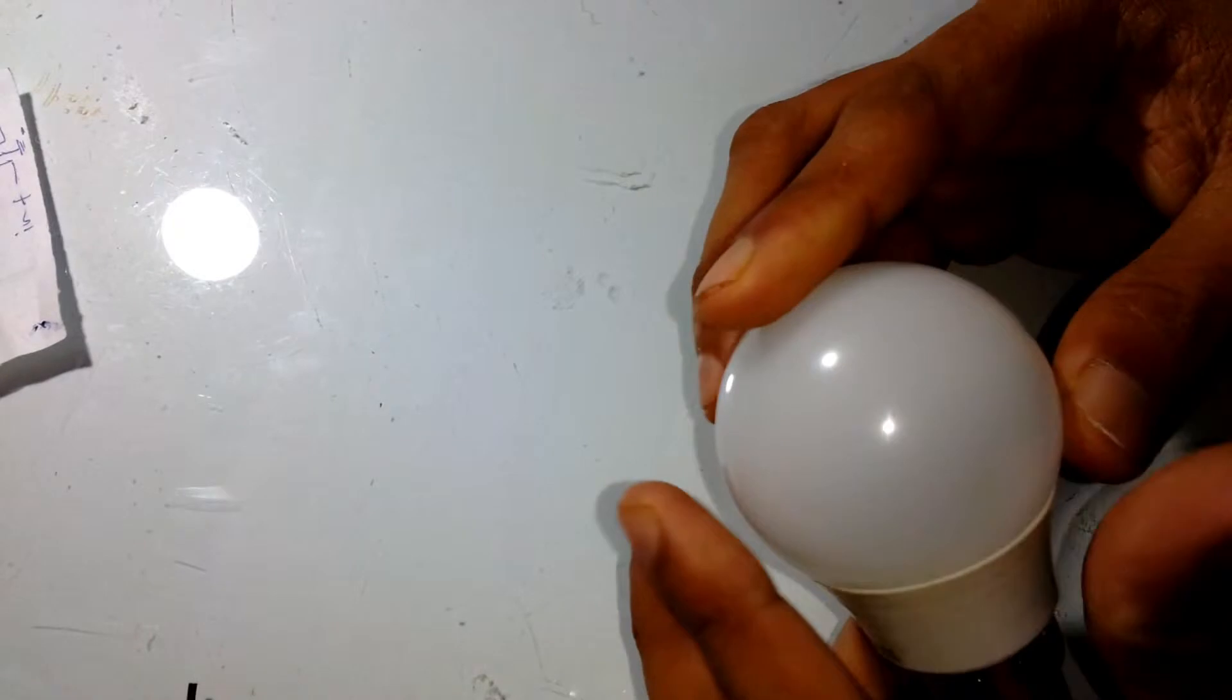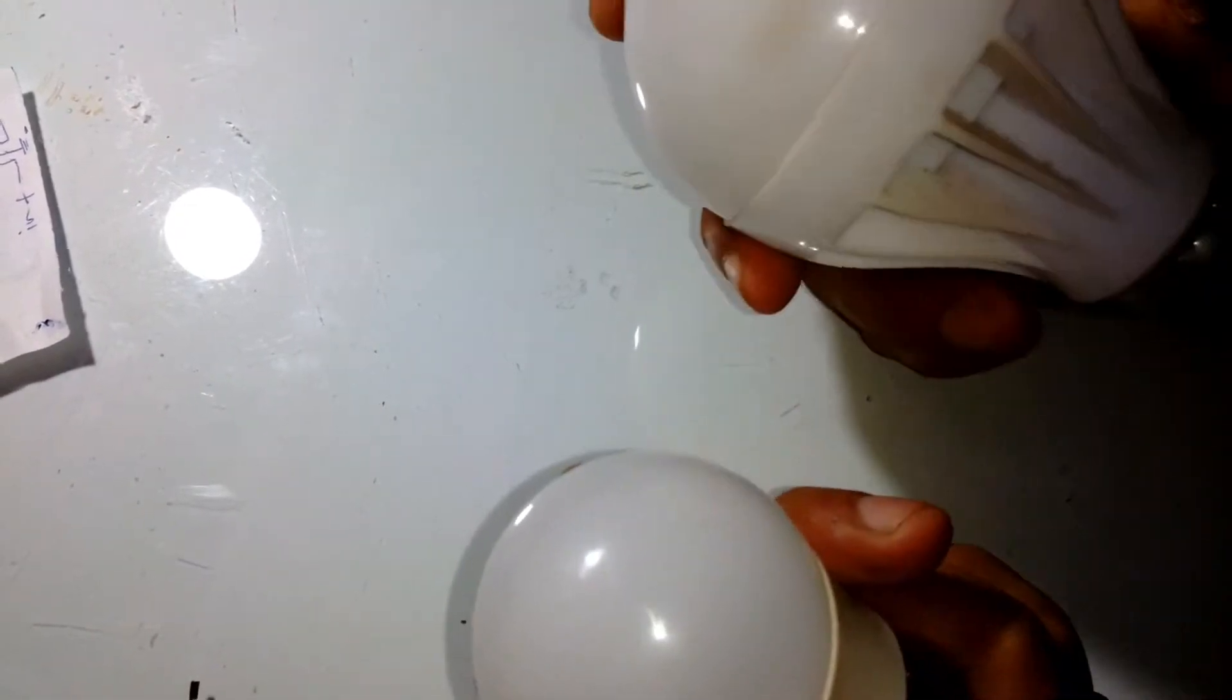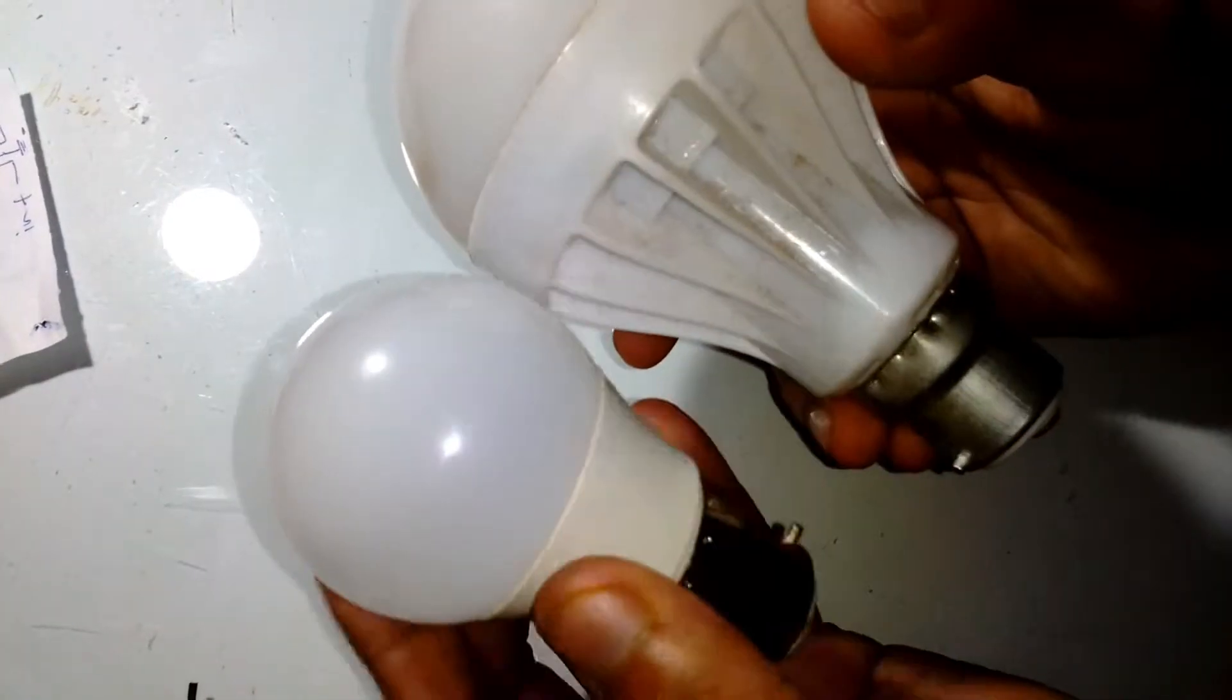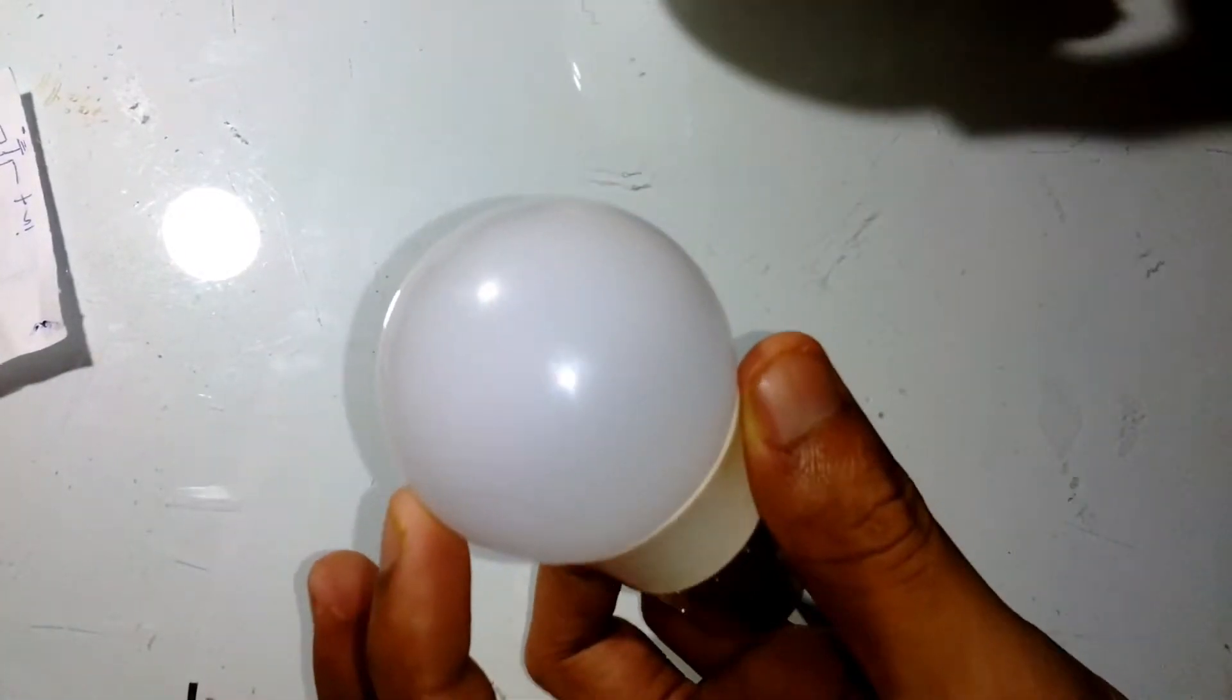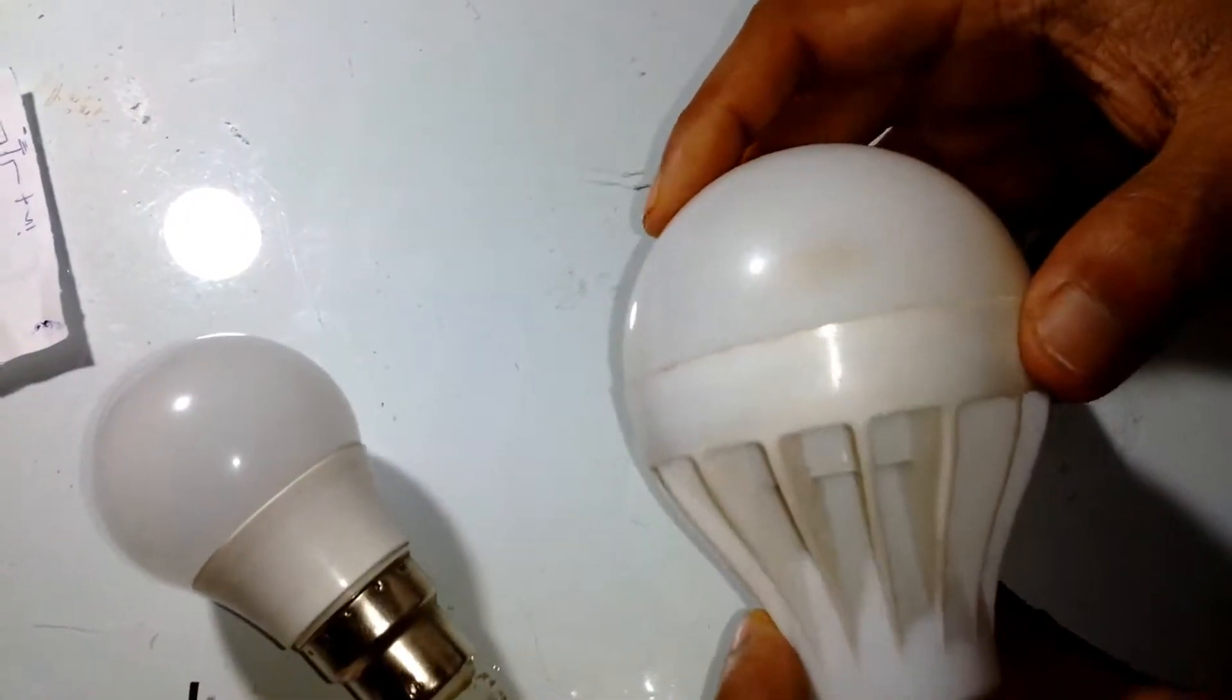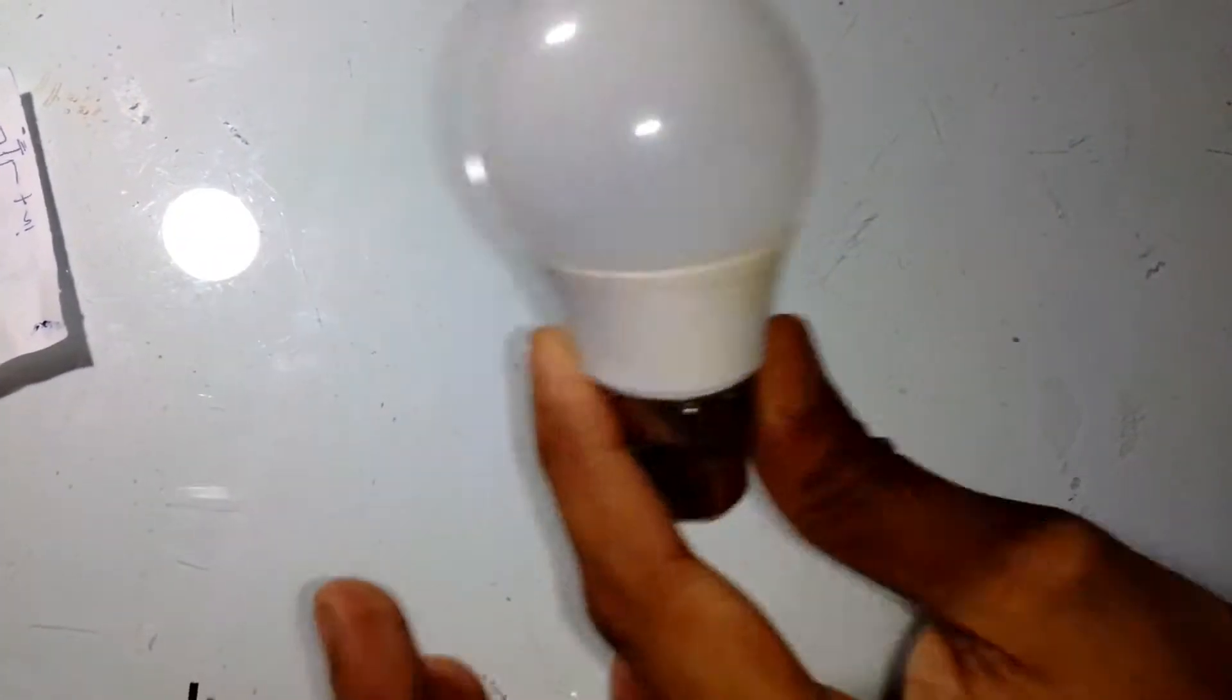Hello friends, welcome to another episode. In today's episode, I'm going to show you how you can convert a 220 volt LED bulb into a 12 volt LED bulb. Here you can see I have two LED bulbs at hand: a smaller 3 watt LED bulb and a larger 9 watt LED bulb.